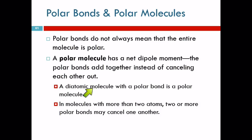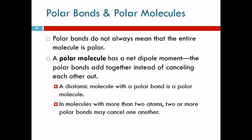If you have a diatomic molecule, a diatomic molecule has two atoms. If that is a polar bond, the molecule has to be a polar bond. There's no other bond to cancel it out. But when you have molecules with more than two atoms, you can have polar bonds and a non-polar molecule.